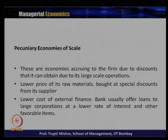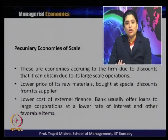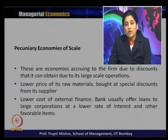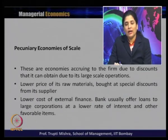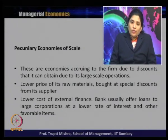Now we come to the second main type of economies of scale: pecuniary economies of scale, where there is a reduction in the price of raw materials or inputs, giving the firm a cost advantage. Pecuniary economies occur due to discounts the firm obtains through large-scale operation. For example, lower prices for raw materials bought at a special discount from suppliers — when buying in bulk you get a lower rate. If the scale of operation increases, firms get a special discount from suppliers because they buy more.